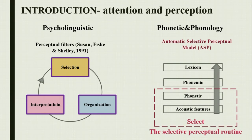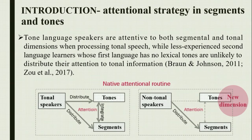With the help of such a perceptual routine, listeners can distribute their attention to the most reliable acoustic parameters. According to this model, the perceptual routine is language-specific. It suggests that non-native listeners would fail to attend to an L2-specific acoustic dimension that does not exist in their first language system, because they lack an L2-specific perceptual routine. Only native listeners are able to automatically extract information from the linguistic input.